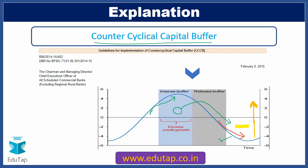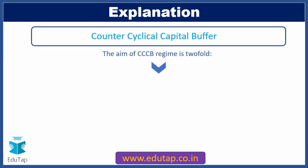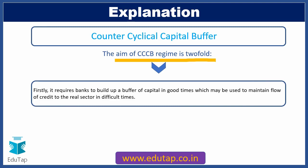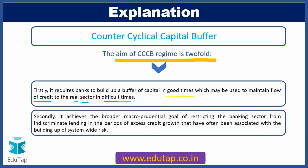The aim of the CCCB regime is twofold. Firstly, it requires banks to build up a buffer of capital in good times — the expansionary phase — which may be used to maintain the flow of credit to real sectors in difficult times — the contractionary phase. Secondly, it achieves the broader macro-prudential goal of restricting the banking sector from indiscriminate lending during periods of excess credit growth, which has often been associated with the build-up of system-wide risk that can affect the entire banking sector.